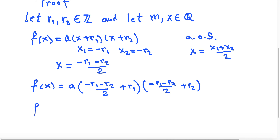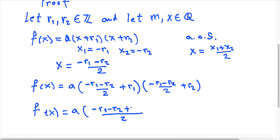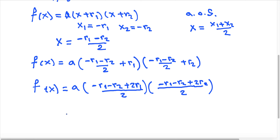If I rearrange the factors inside the parentheses, the first factor becomes (minus r1 minus r2 divided by 2) plus (2r1 divided by 2). The second factor becomes (minus r1 minus r2 divided by 2) plus (2r2 divided by 2). Now I can simplify a little bit more.